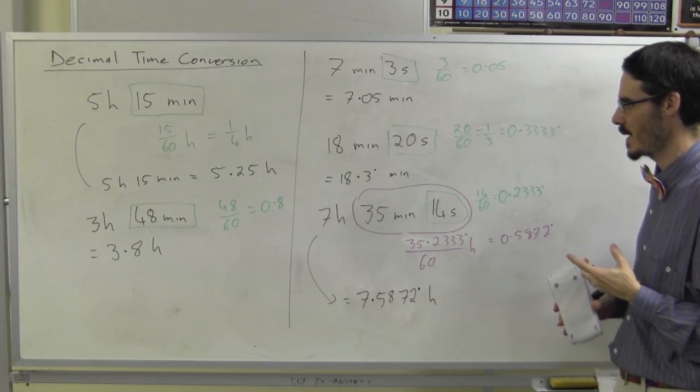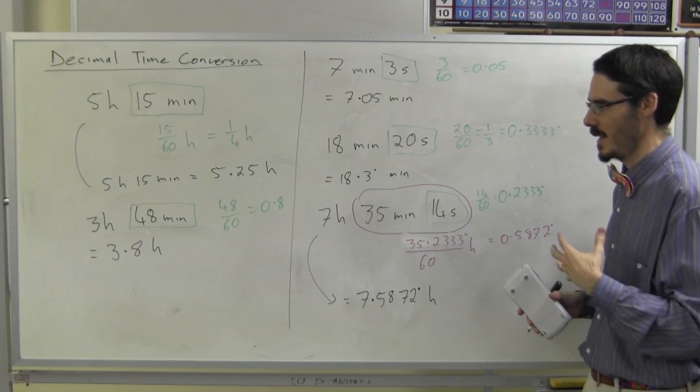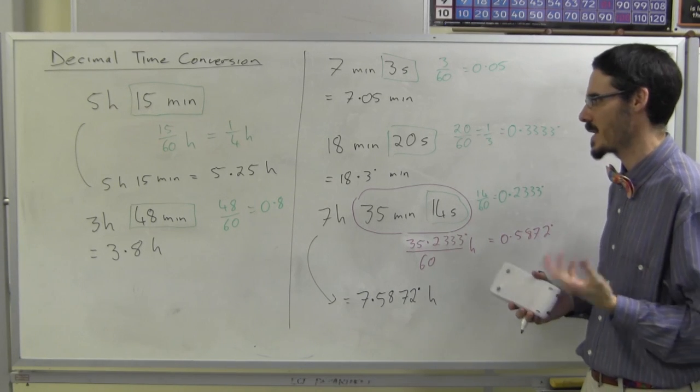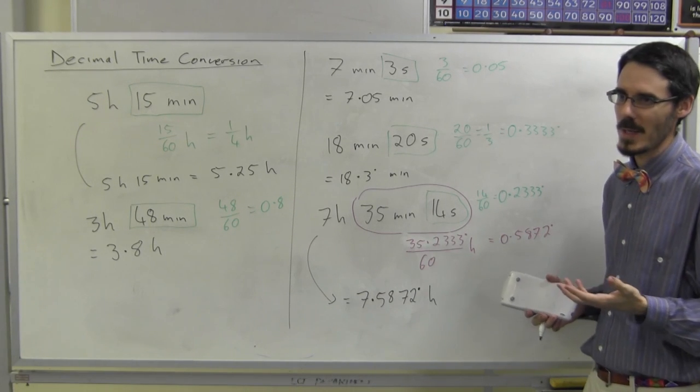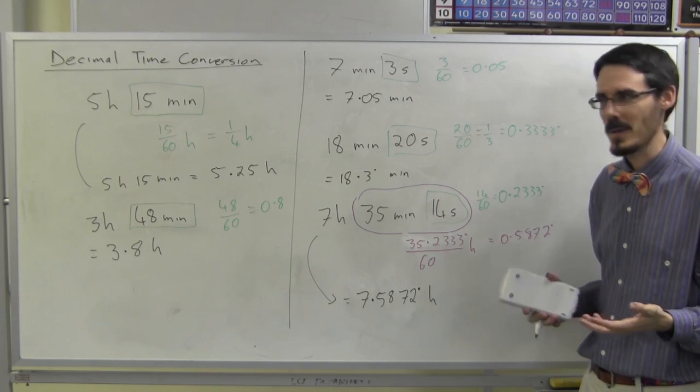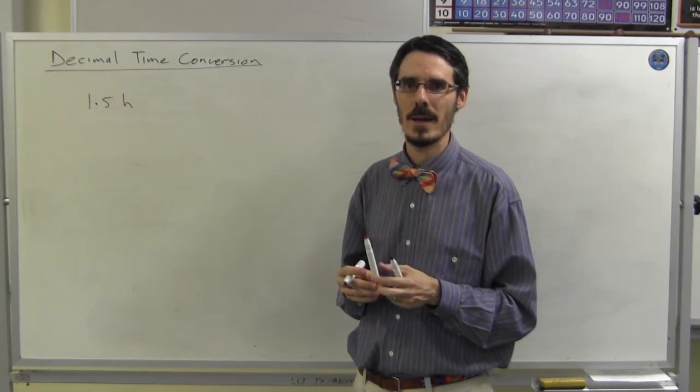You just have to remember, they're not decimals, they're out of 60. If you had days and hours, it would be number of hours out of 24 and so on.